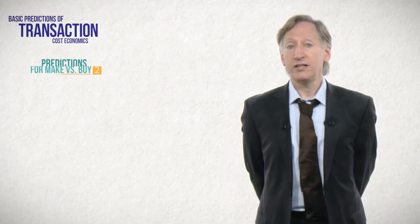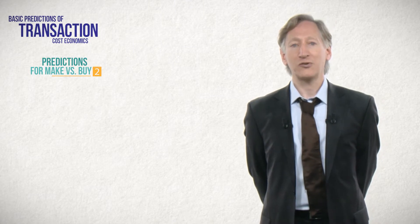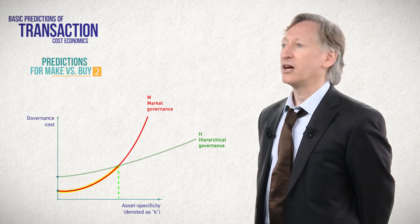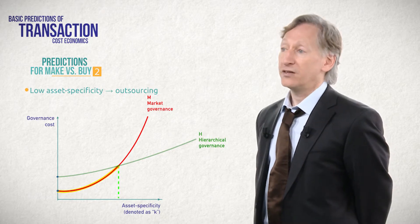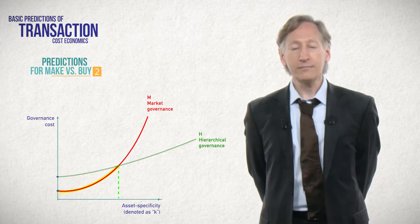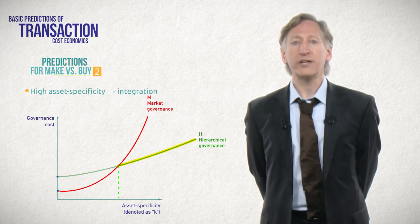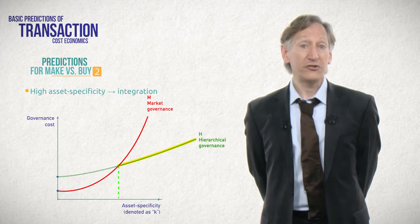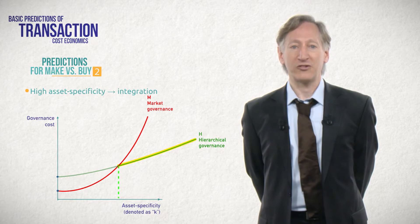Thus, TCE yields two fundamental predictions and two moderating predictions regarding the canonical transaction of make versus buy, or market versus hierarchy. Prediction one: transactions characterized by low asset specificity will be governed in the market — in this area, my furniture firm and your railroad can contract. Prediction two: transactions characterized by high asset specificity will be governed within the firm, that is, vertical integration or hierarchy — in this area, I may have to build my own rail line, or you and I may have to merge to make this transaction occur.